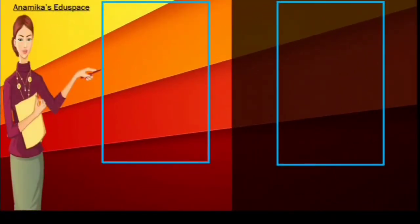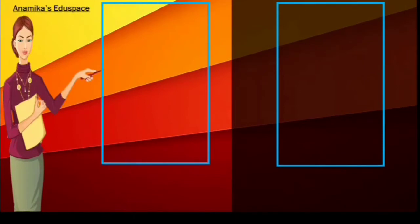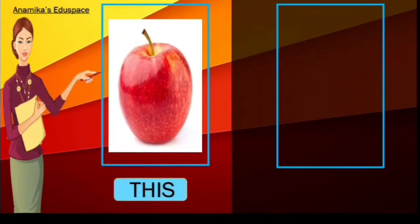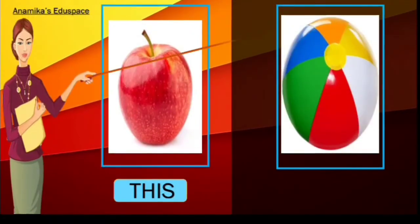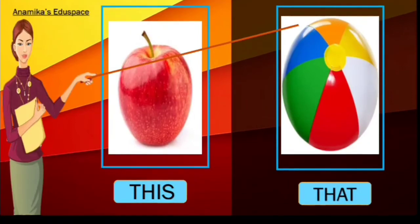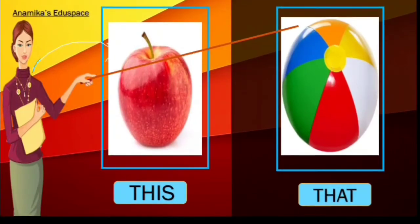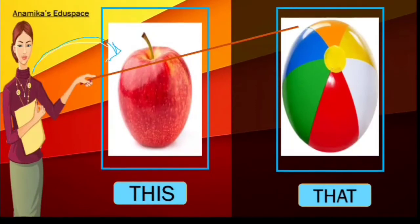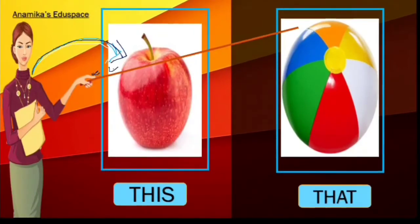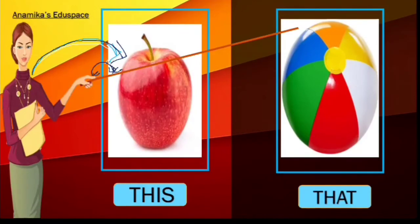Hi, I am Miss Rosie. Today I am going to teach you the concepts of 'this' and 'that.' Please do like this video. Apple — this is an apple, T-H-I-S. Ball — that is a ball, T-H-A-T. The apple is present near Miss Rosie. Miss Rosie can touch the apple and eat the apple.